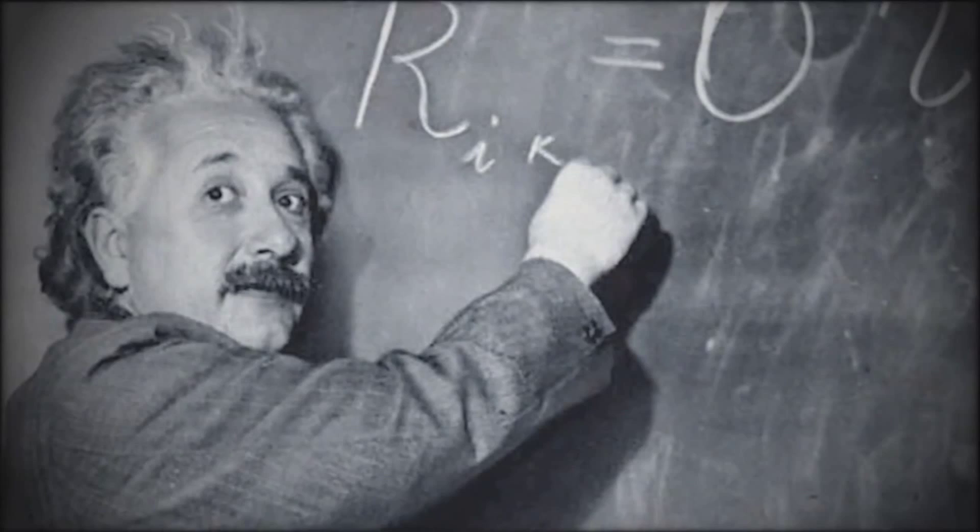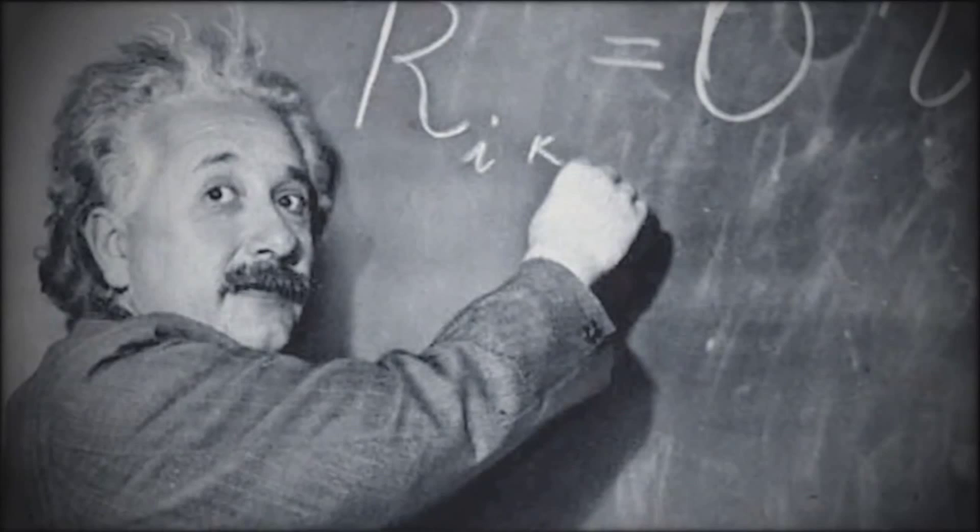Albert Einstein suspected that the same mathematics that allows us to understand the cosmos could be a sample of its own artificial nature. He said the most incomprehensible thing about the universe is that it is comprehensible. In other words, the laws and principles that govern the cosmic dynamics could be lines of code made by the Creator, whoever it is and wherever it is.